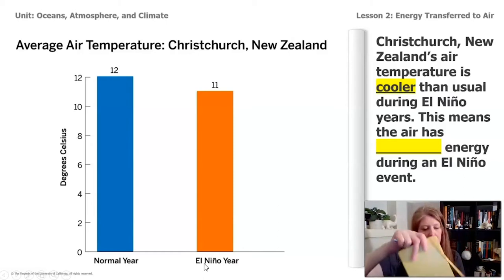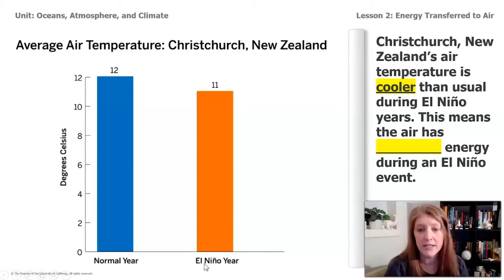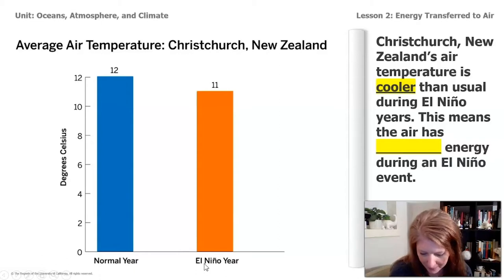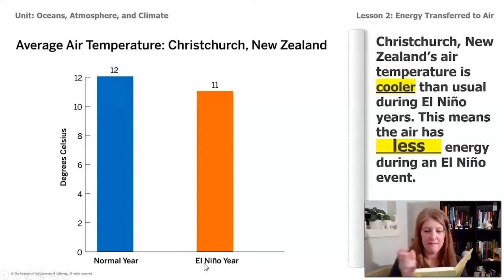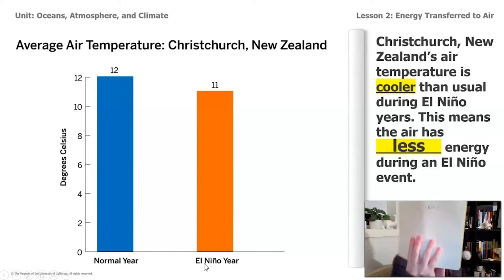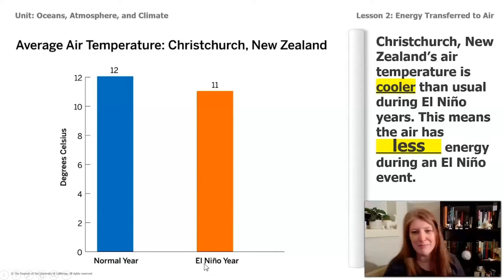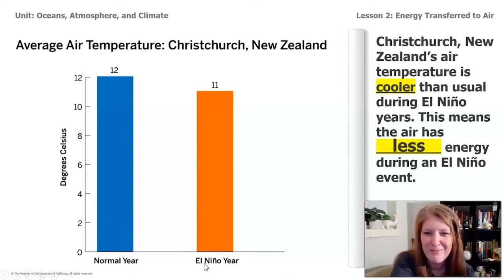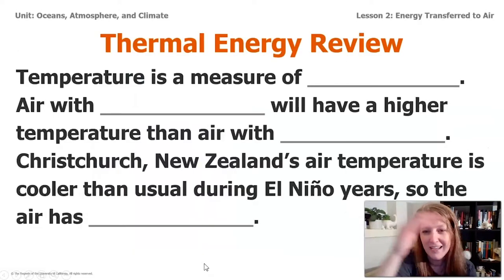Grab your notes — I'm going to do mine. Just jot down really quick how you would fill in that blank. I wrote down 'less' — just like that. I might have already known the answer because I'm a teacher, but I'm pretty sure you knew the answer too. It makes a lot of sense: something with less temperature is going to have less energy.